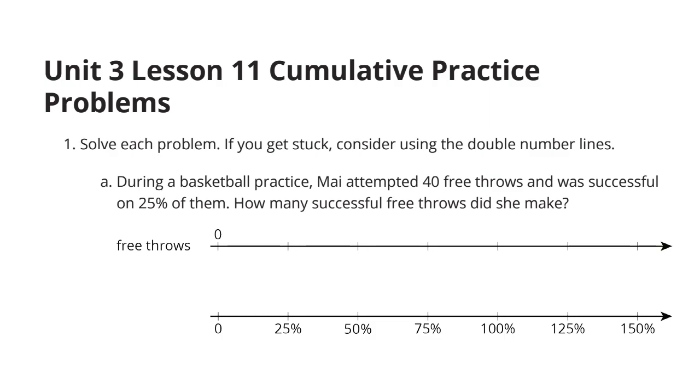In question one, we're going to solve each problem. If you get stuck, consider using the double number lines. During a basketball practice, Mai attempted 40 free throws and was successful on 25% of them. How many successful free throws did she make? Well, this method involves using these double number lines. 100% of the free throws she attempted was 40. So we're going to put 40 with the 100% because that's what she attempted.